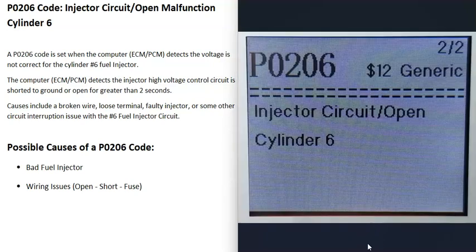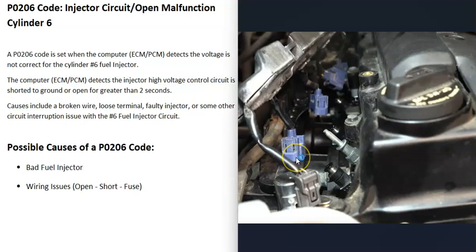Some possible causes of a P0206 code: the main things are either the fuel injector on cylinder six has gone bad and needs to be replaced, or there's some kind of issue in the wiring — like an open circuit, a short, or a blown fuse.